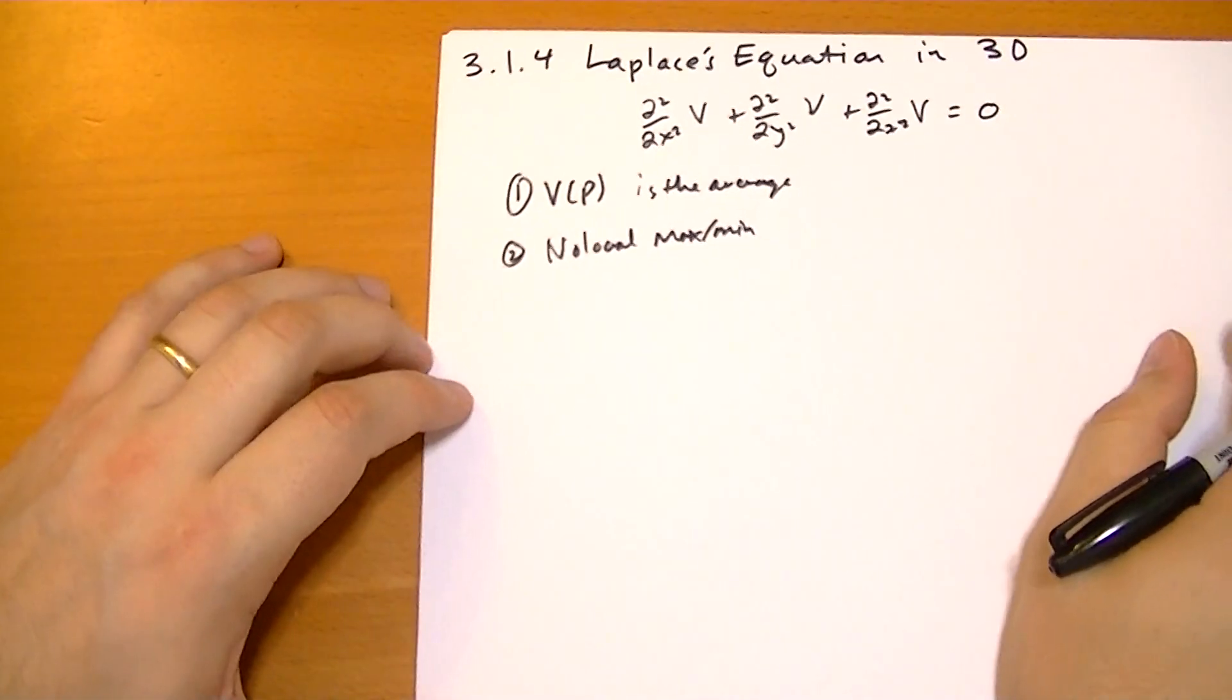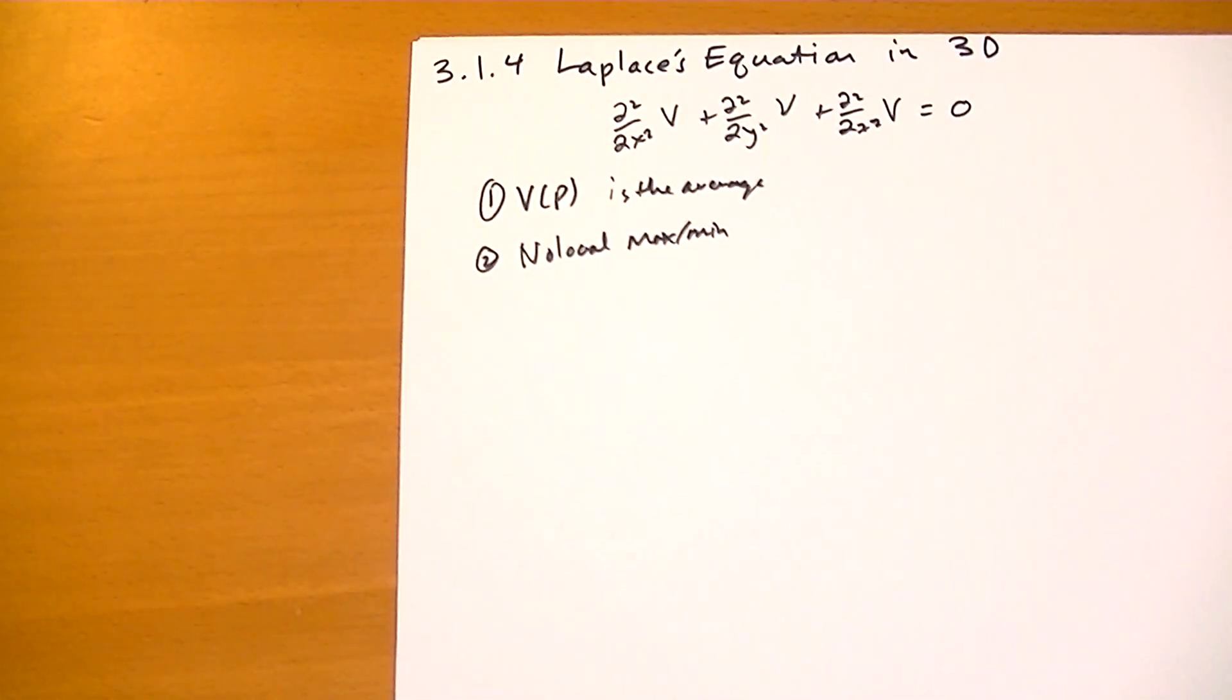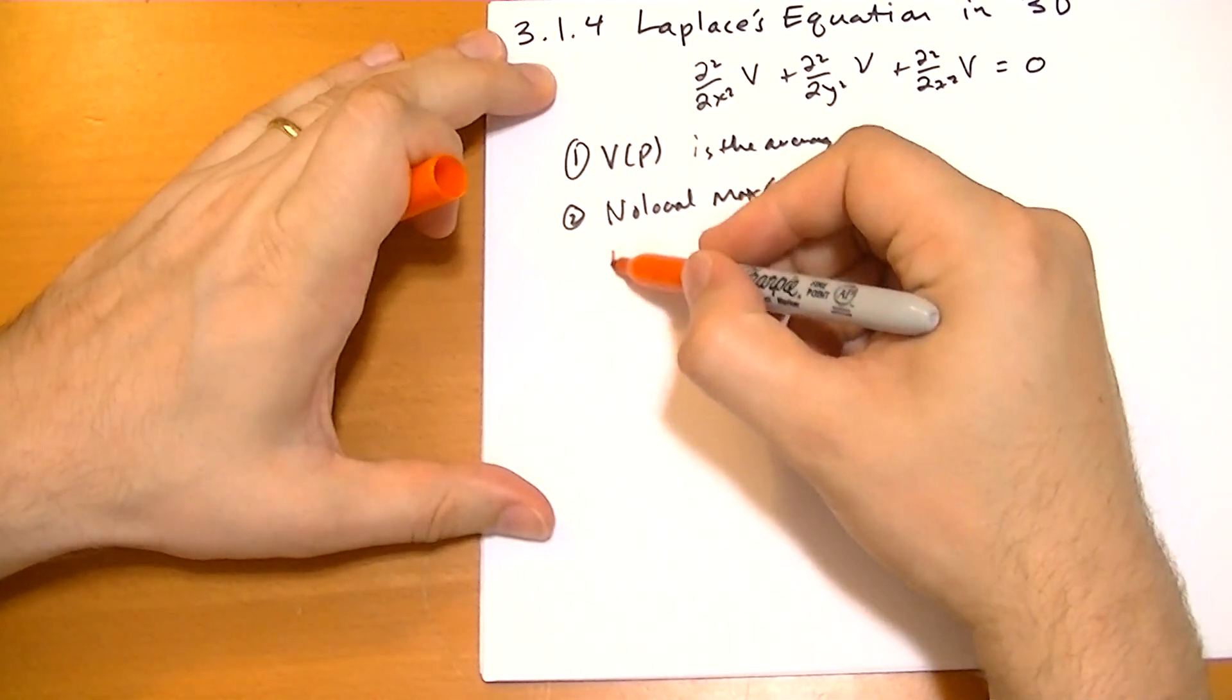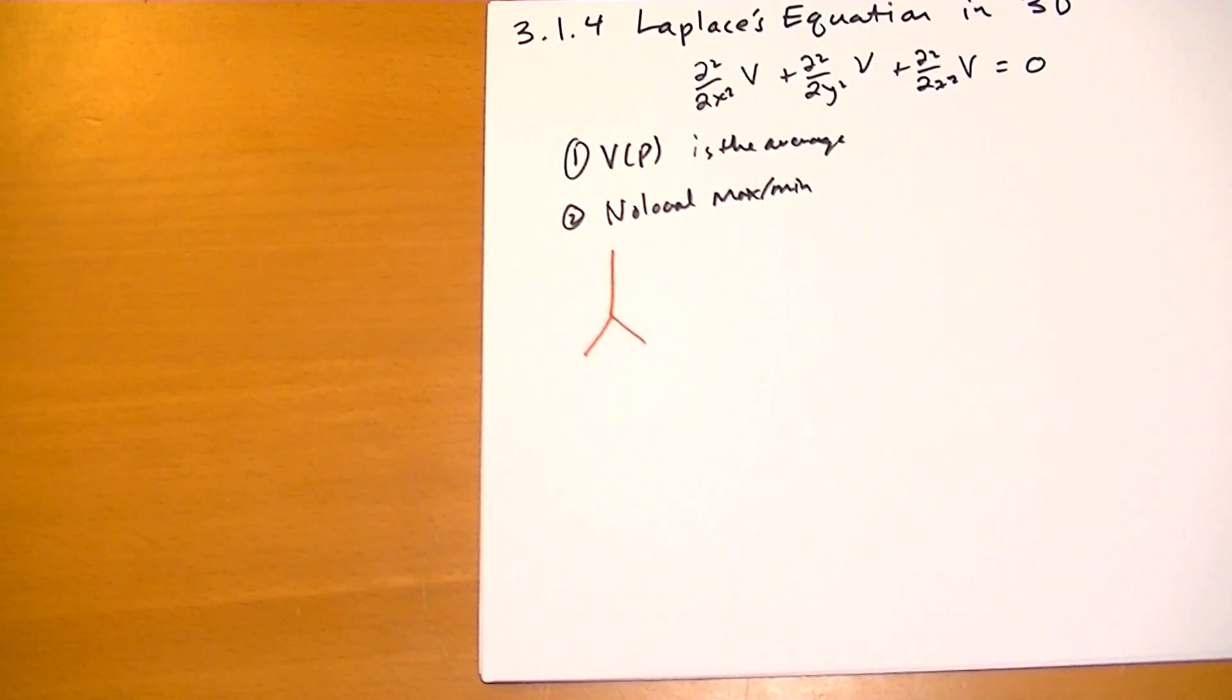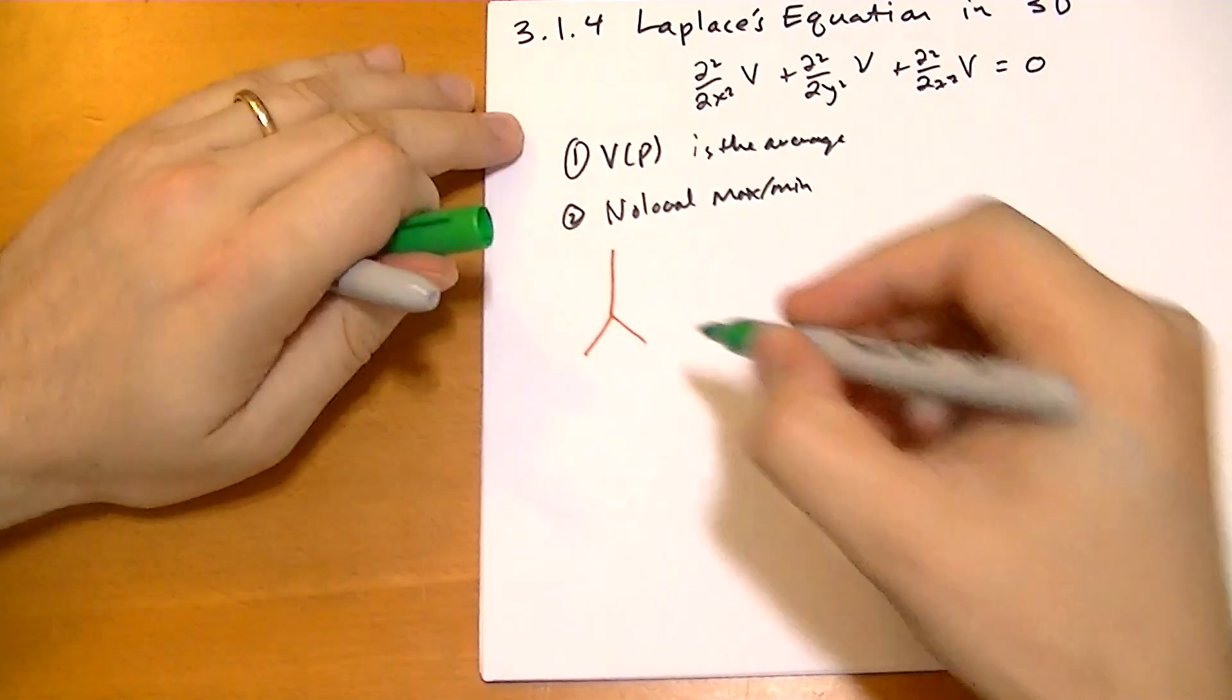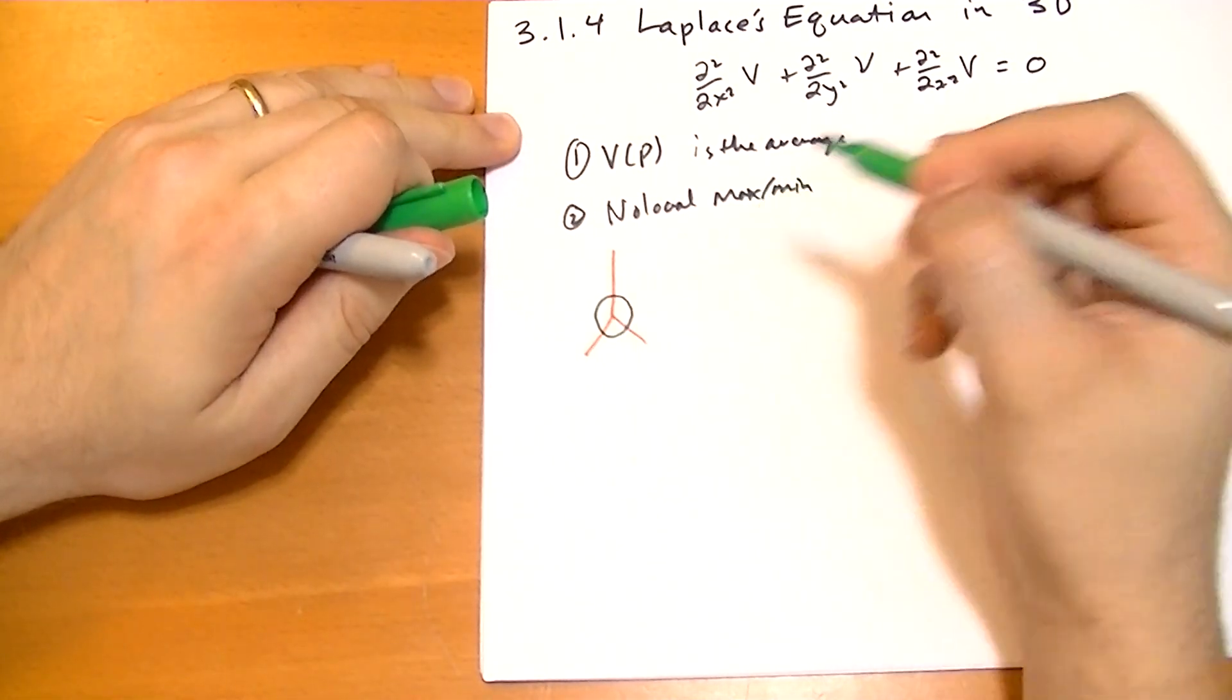So the extremes are going to occur on the boundary conditions for whatever solution you find. So proving one, we're going to use the example that you've seen about 20 million times now. So we have a sphere centered on the origin.